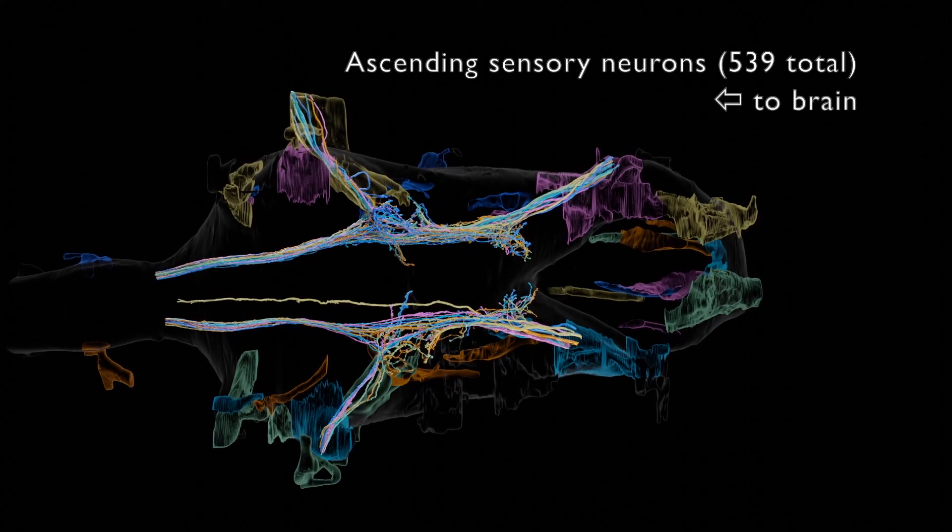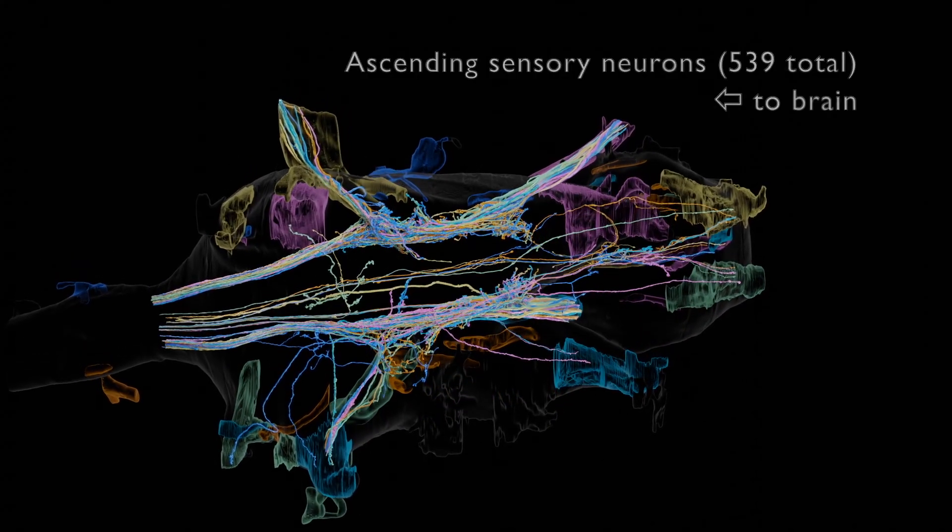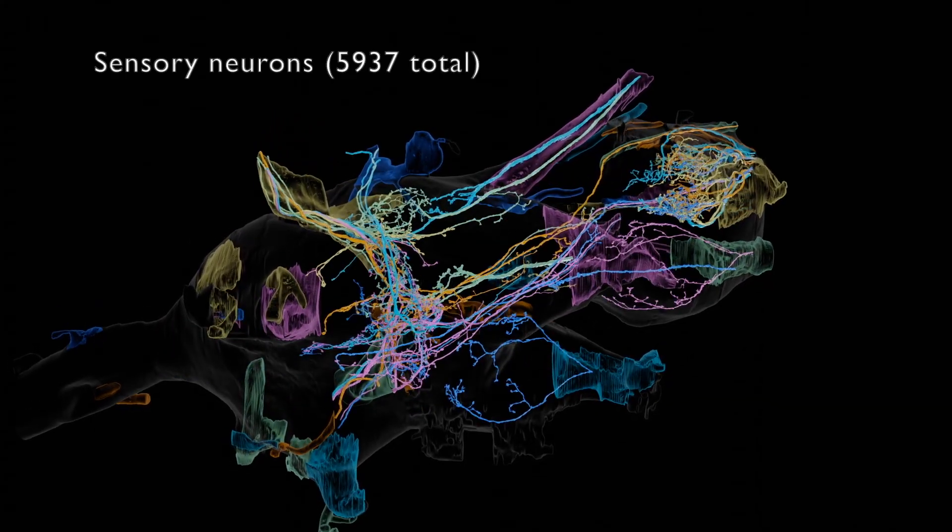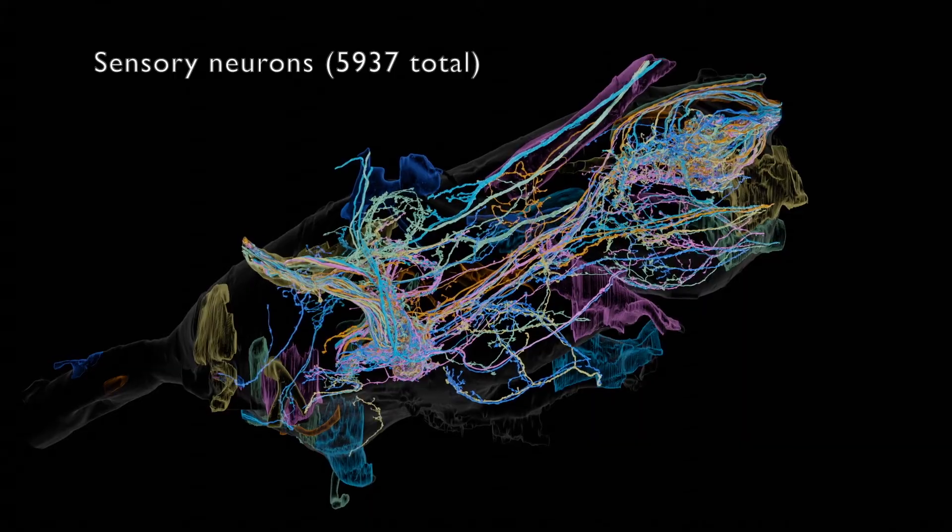Ascending sensory neurons bring information from the periphery directly to the brain. Most sensory neurons, however, terminate in the ventral nerve cord.